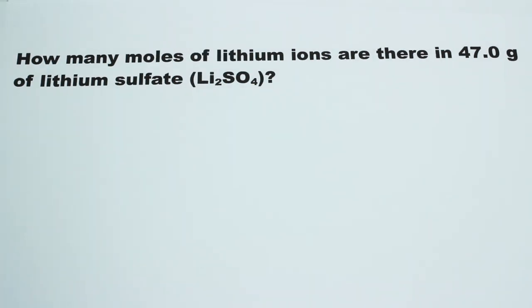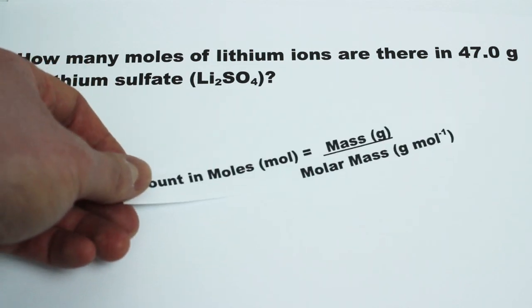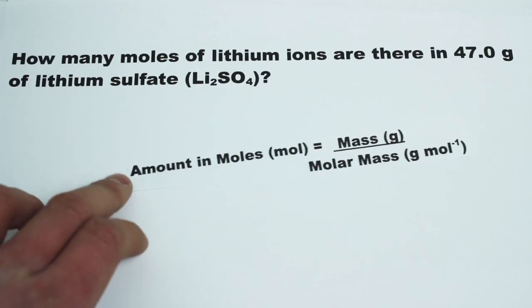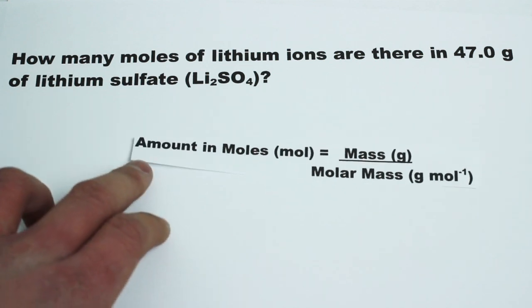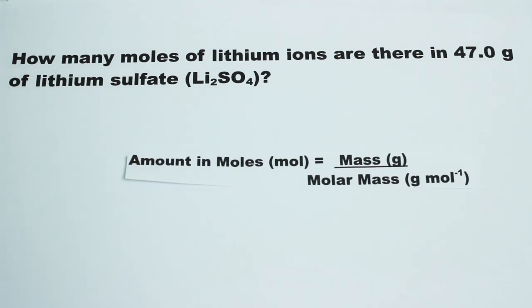So the first thing we have to do is consider the formula we are going to use for this calculation. The formula states that in order to work out the amount in moles, we must divide the mass of the sample of the substance, which is given in grams, by the molar mass of the substance, which is the mass of one mole of the substance.